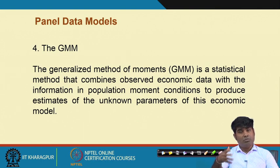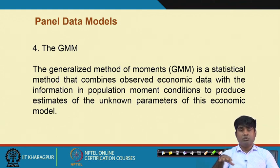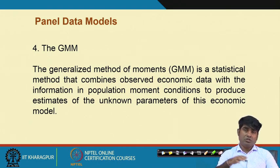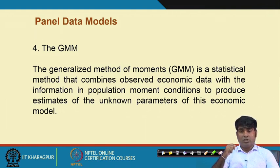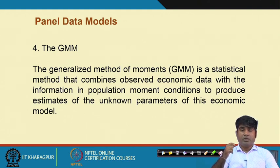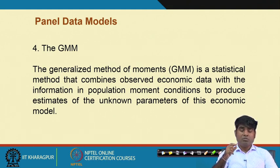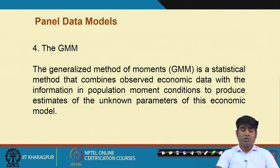There is a concept called dynamic panel data modeling, where we sometimes allow the model to go through endogeneity impact. We can bring lag variables into the panel data setup. Instead of just i,t we can use i,t minus j. These specifications are sometimes required while using panel data combining time series data and cross-sectional data, because in some cases endogeneity is stronger when linking time series data with cross-sectional data.